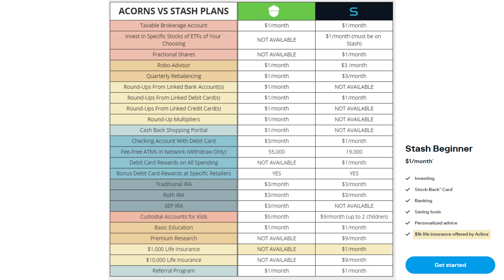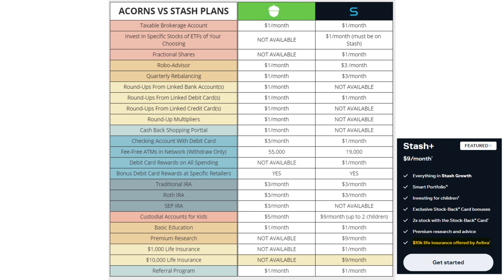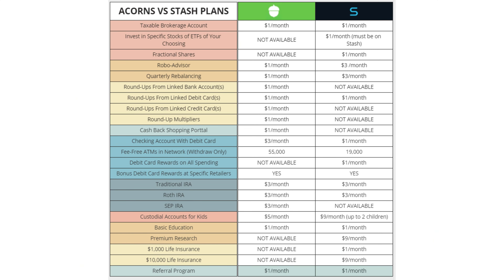One small thing that Stash offers that Acorns doesn't is term life insurance bundled with your subscription. The basic Stash plan offers $1,000 worth of term life insurance, while the premium plan comes with $10,000. You must be between ages 18 and 54 to be eligible. It's a cool feature, but if you're young and relatively healthy you can get a $500,000 or even a $1 million policy for relatively cheap elsewhere, so it's not a huge advantage — but it is something. Finally, both Acorns and Stash have a referral program, generally $5 per person you refer, sometimes increased for certain periods of the year.